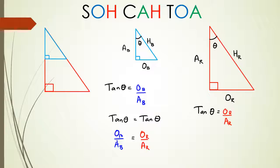You can actually try this with sine and cosine and what you'll find is you're getting the same idea — where you'll have opposite over hypotenuse equals opposite over hypotenuse, or adjacent over hypotenuse equals adjacent over hypotenuse. Alright, moving on.